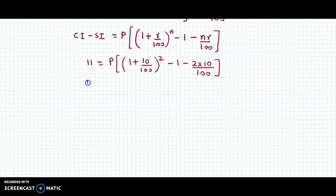We have 11 equals P into 1.1 squared minus 1 minus 0.2. Let us simplify further.